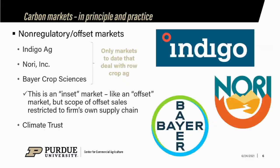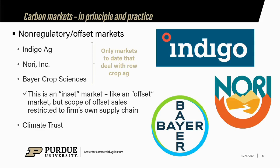It's these non-regulatory offset markets that are really creating the interest and opportunity to earn money for carbon credits in row crop agriculture. There are a number of these markets that have popped up, some just in the last year. Indigo Ag, Nori Incorporated, and others are unique in that they are, to my knowledge, the first to have allowed row crop agriculture to serve as a source of offsets for carbon.